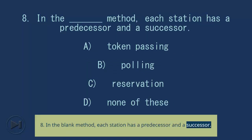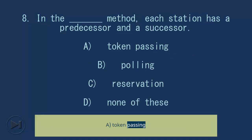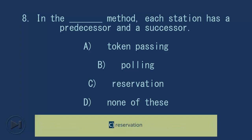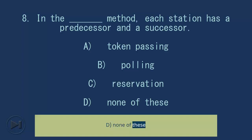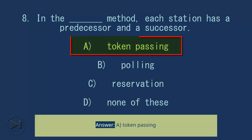Question 8: In the blank method, each station has a predecessor and a successor. A) Token Passing, B) Polling, C) Reservation, D) None of these. Answer: A) Token Passing.